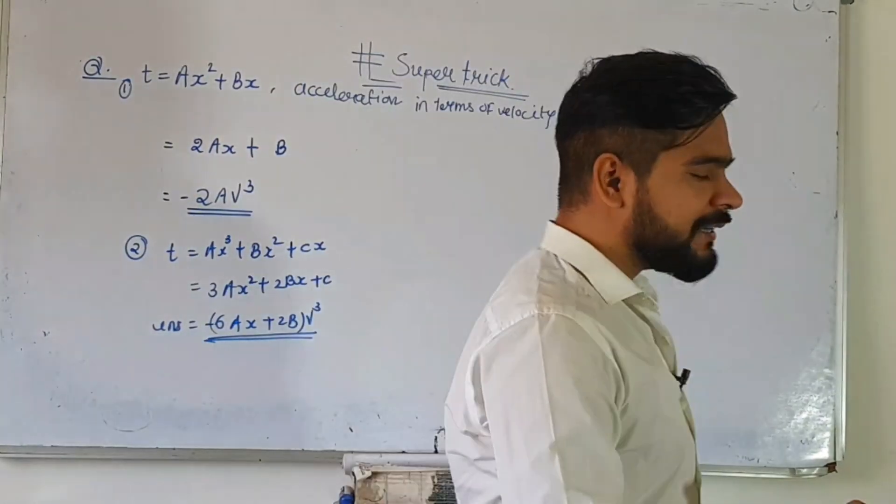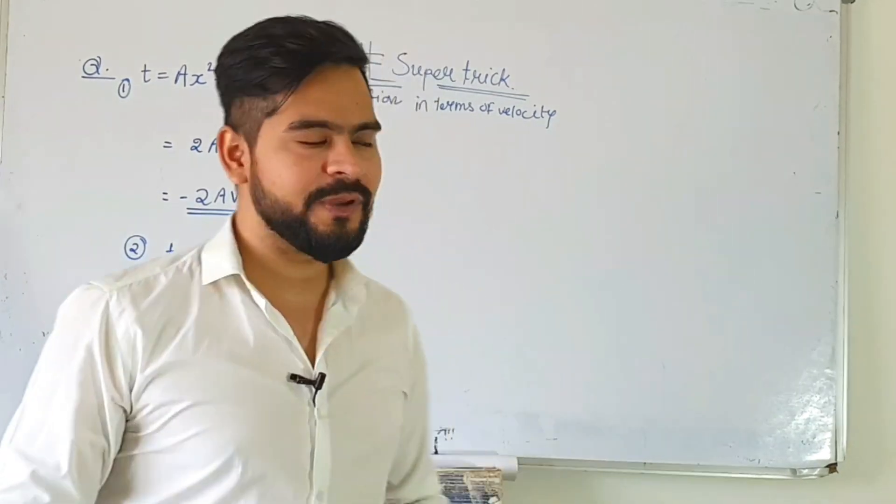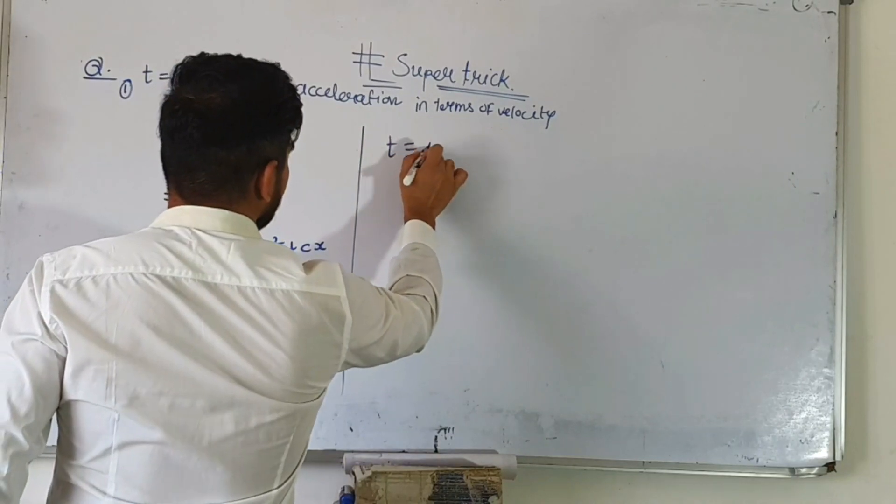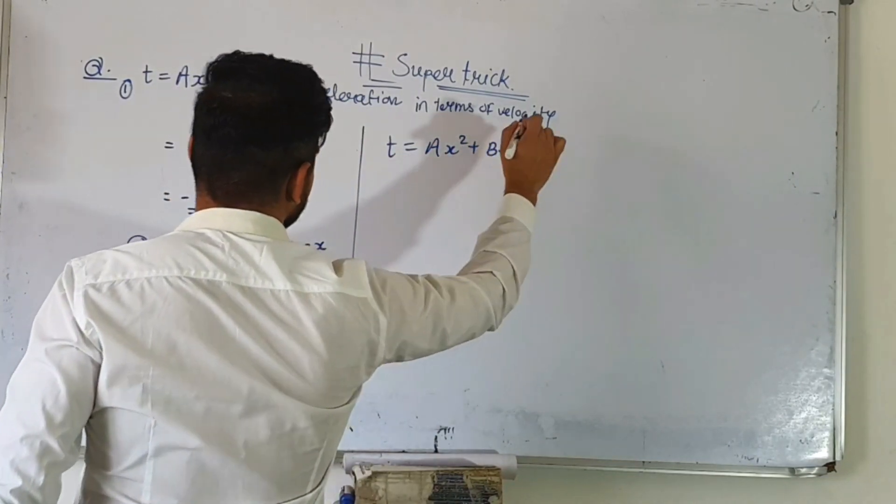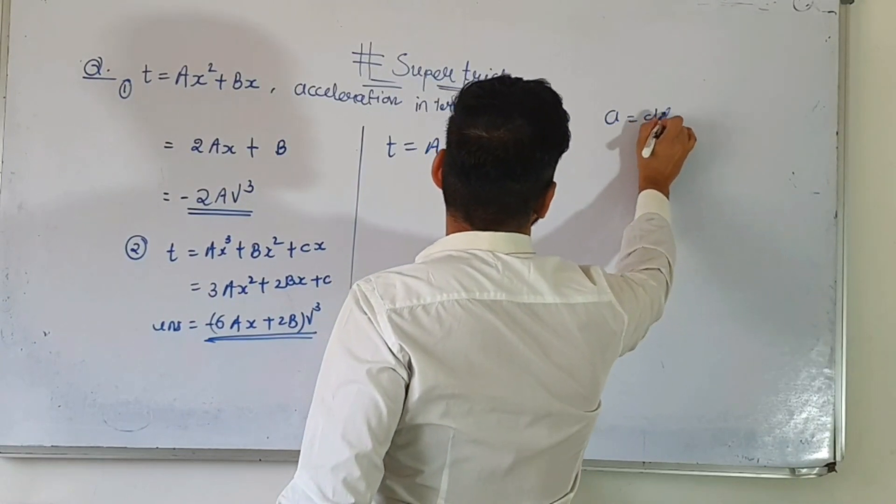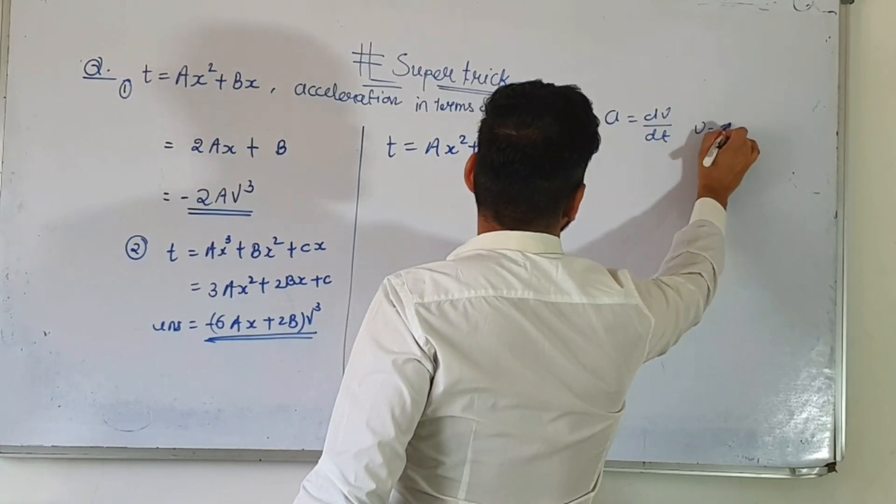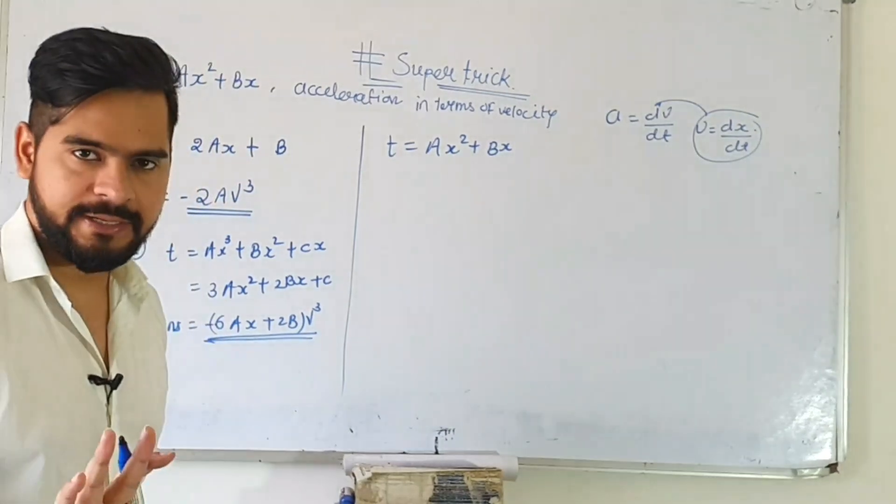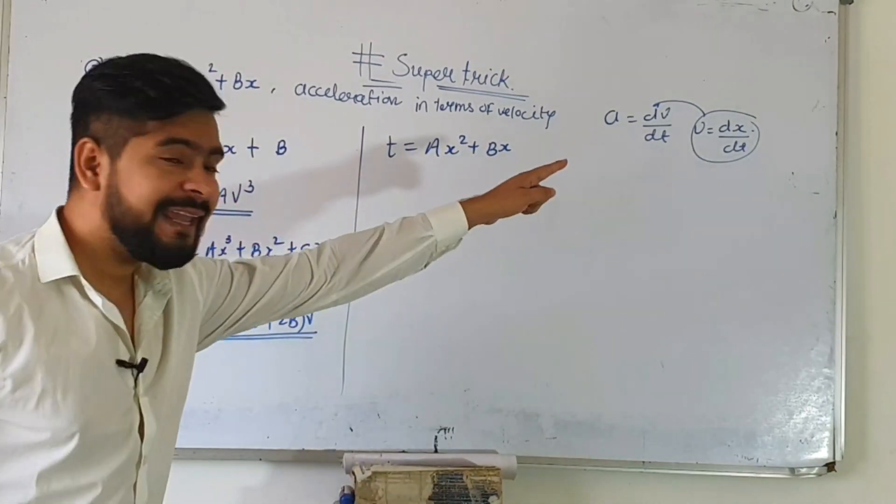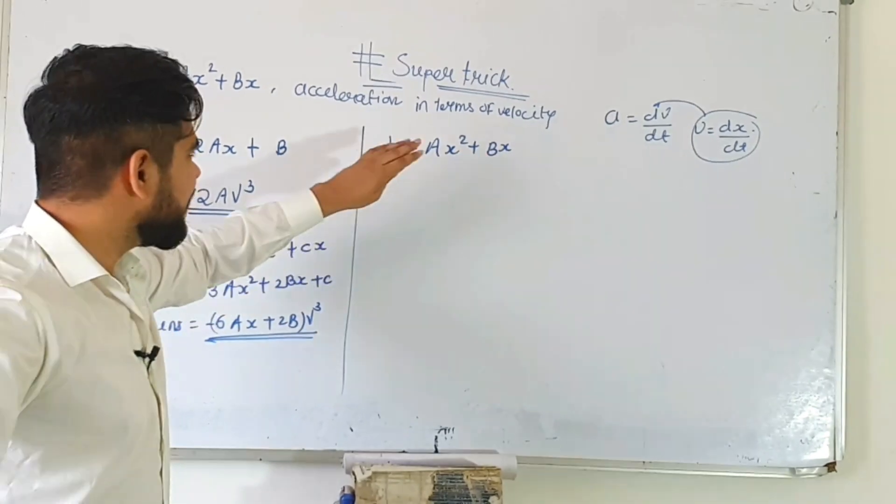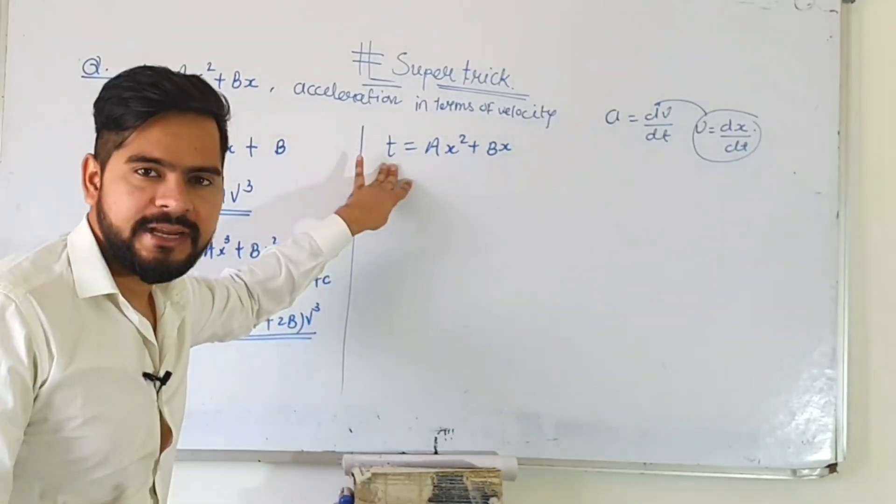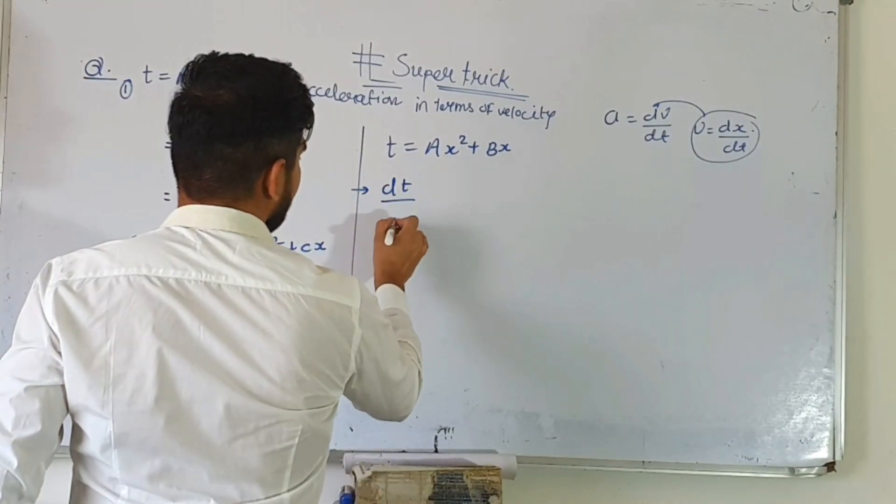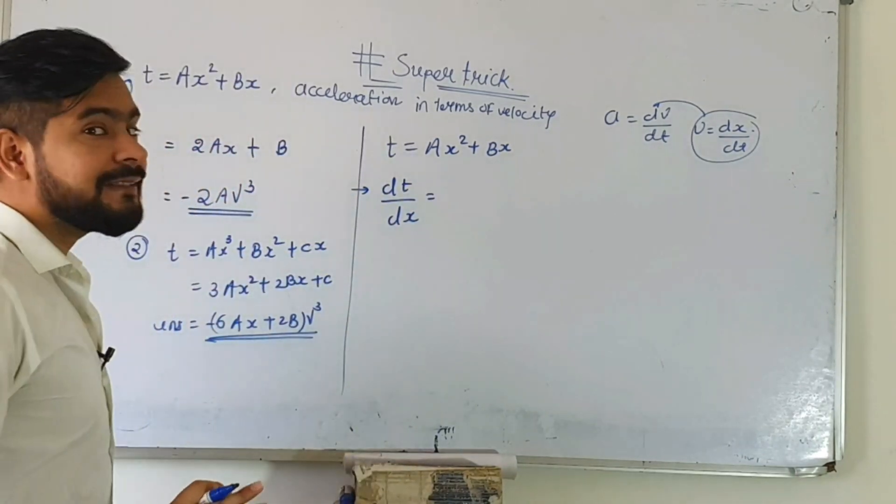Now I'll show you the generalized method, the real method, so you can feel it better. See, time was given: t equals ax square plus bx. We have to find acceleration which is dv by dt. If I have velocity, which is dx by dt, then I can go from velocity to acceleration. I have t. I can find dx by dt, but here I can't find dx by dt directly because t is in function of x. So what I can do? I can find dt by dx. That means differentiate time with respect to x.